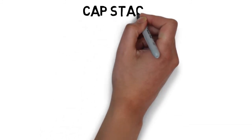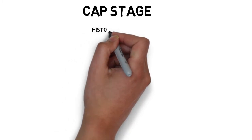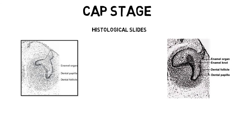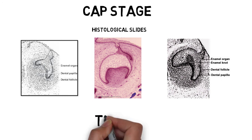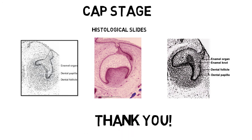Here are some histological slides of the cap stage for better understanding. Previously it was just animation and diagrammatic representation — these are what the cap stage actually looks like under histological slides. Here you can appreciate the three groups of cells: enamel organ, dental papilla, dental follicular cells, and also the enamel knot. I'll be discussing the bell stage and root formation in my next video. I hope you liked the video — please take care of yourselves and I'll see you next time. Goodbye.